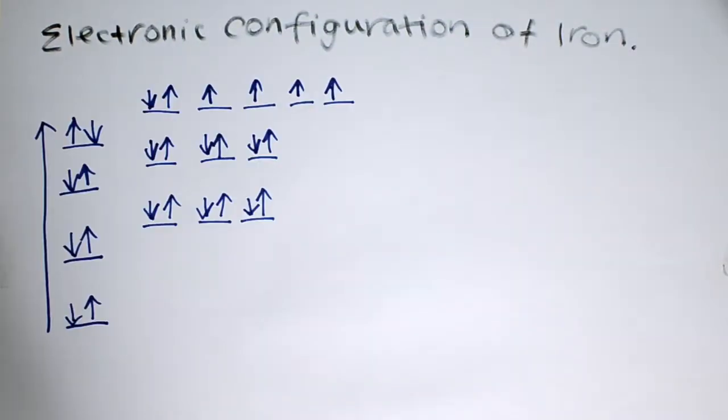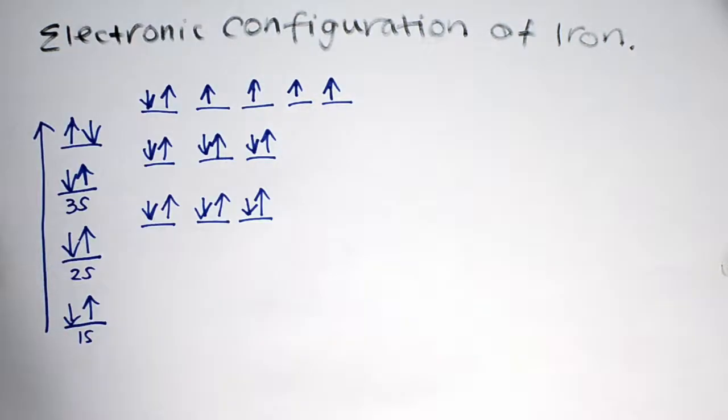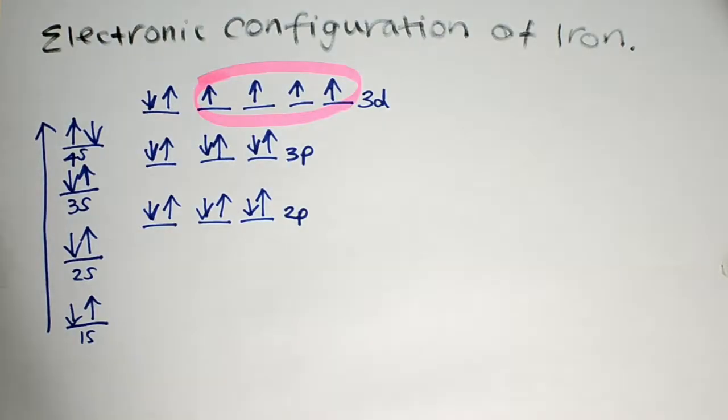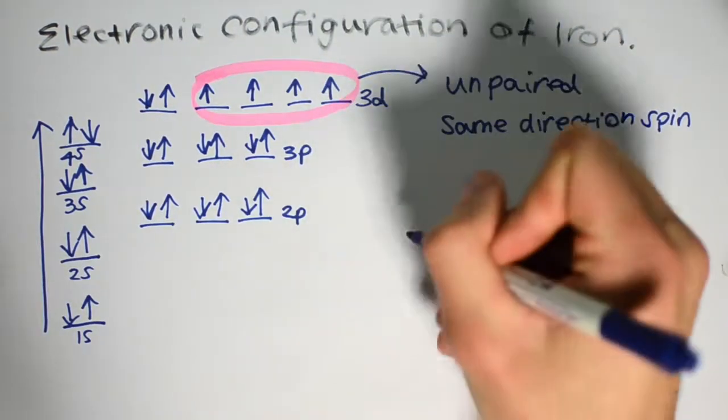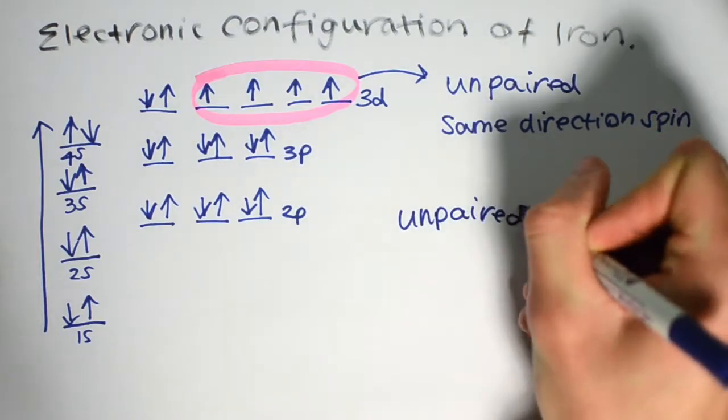But first, in order to understand how ferromagnetism occurs, we must look at the element iron. Iron is a first-row transition metal that has an electronic configuration of 3d6-4s2. As you can see, there are four electrons in the 3d orbital which are unpaired and spin up. Fundamentally, this is where the magnetic effect originates from.